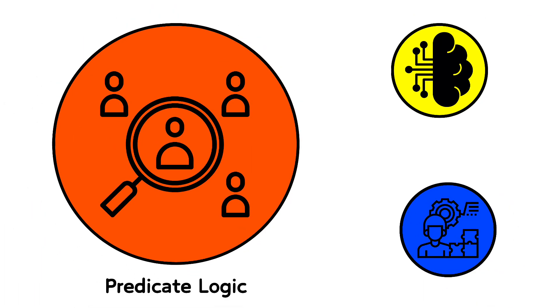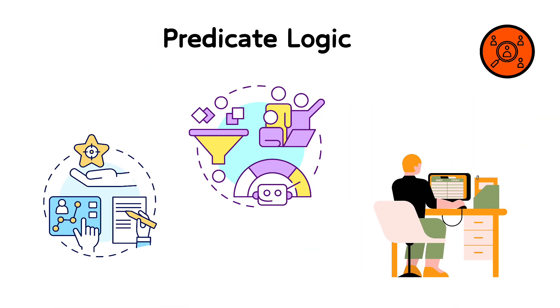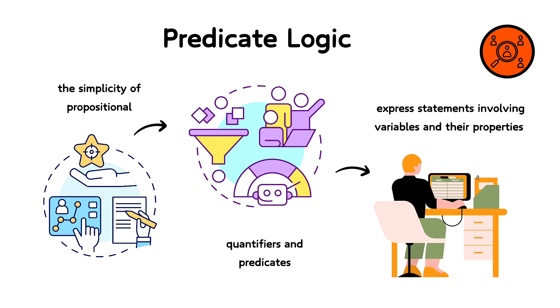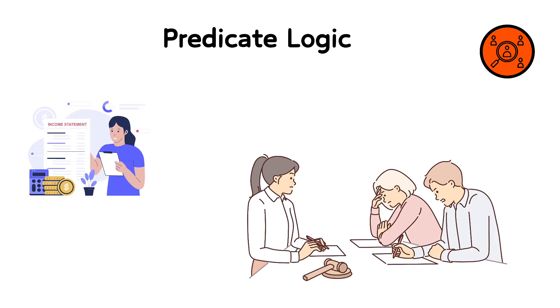Predicate logic extends the simplicity of propositional logic by incorporating quantifiers and predicates, allowing it to express statements involving variables and their properties. Unlike propositional logic, which only deals with whole statements as units, predicate logic can analyze and construct arguments about elements within those statements.